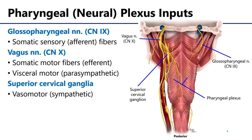When considering each of these inputs, we should consider their neuromodalities. The glossopharyngeal nerves are carrying back somatic sensory, or afferent, information from the pharyngeal neural plexus back to the CNS. So cranial nerve 9 is the afferent from the pharynx, the muscles, and mucosa.